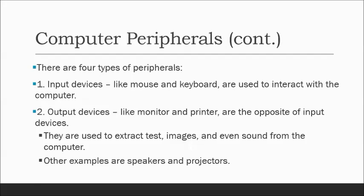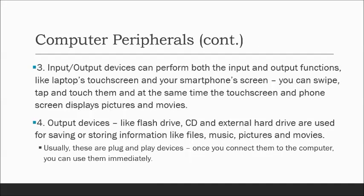The projector is another example of an output device where you project images, videos, or sound. Another kind of computer peripheral is the input/output device, which can perform both input and output. An example is your smartphone with a touch screen — you can tap and input on the screen, and at the same time it displays images, text, and videos. Laptops with touch screen features are also input/output devices.